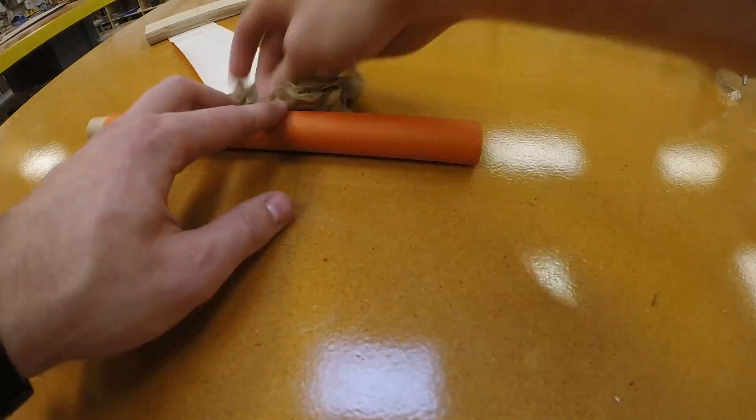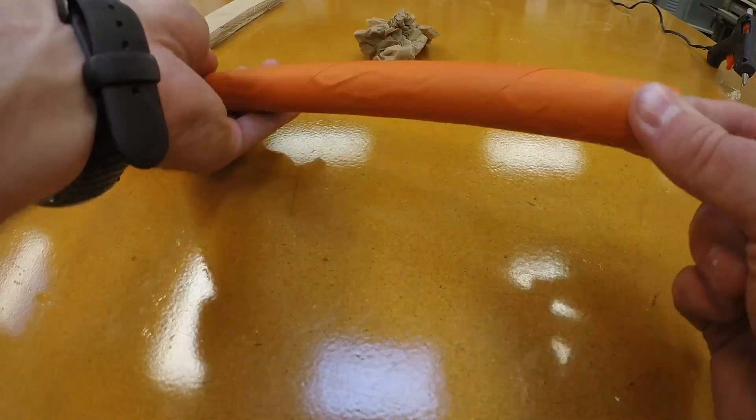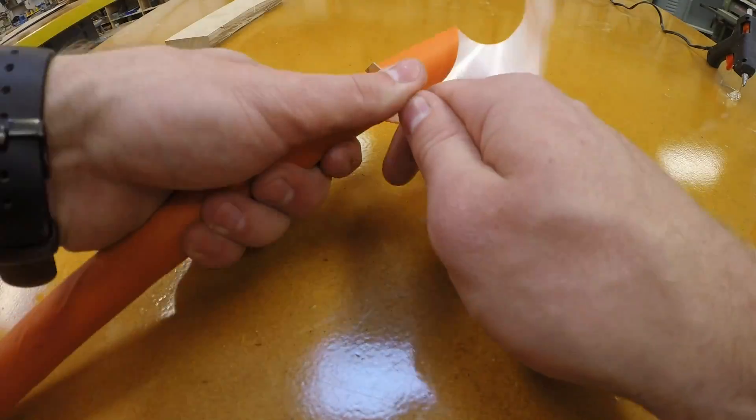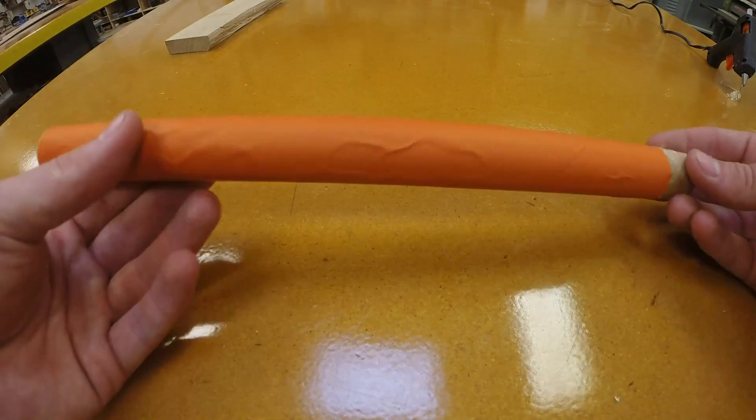Now you're going to do the exact same thing with the other half of your body tube wrap only this time you're winding in the opposite direction and this gives a lot of strength to the body tube. Again, we don't want to glue the cardboard tube inside of this thing by accident. Make sure it can slide out.